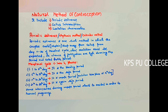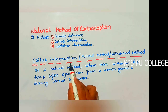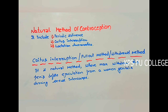A disadvantage of this method is it is applicable only to women who have a normal 28-day menstrual cycle. The next method is coitus interruptus, also called the pull-out method or withdrawal method. It is a type of natural method where the man withdraws the penis before ejaculation from the woman's genitalia during sexual intercourse. A disadvantage is that semen may sometimes get deposited into the vagina without the man being aware of it.